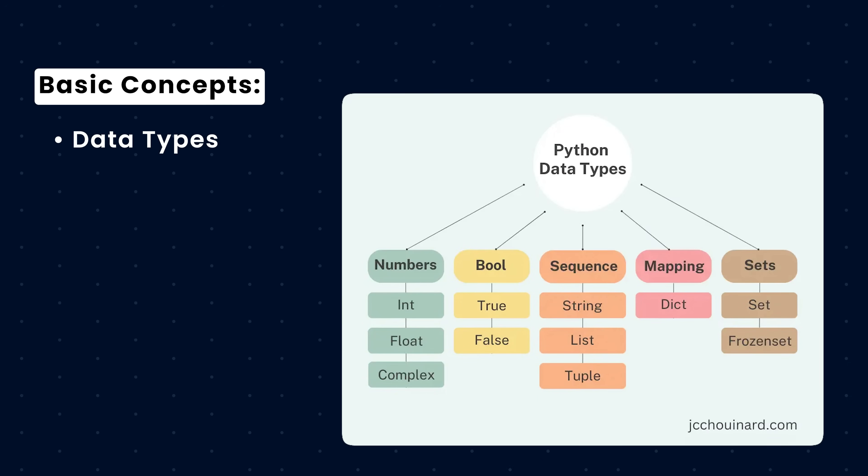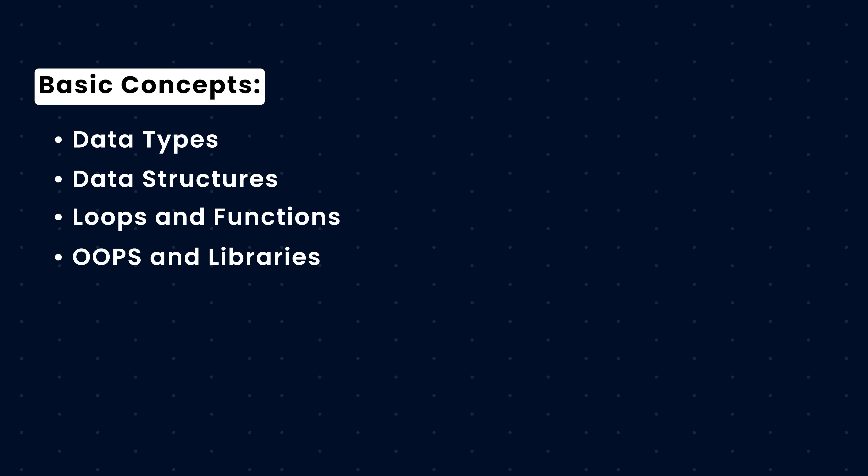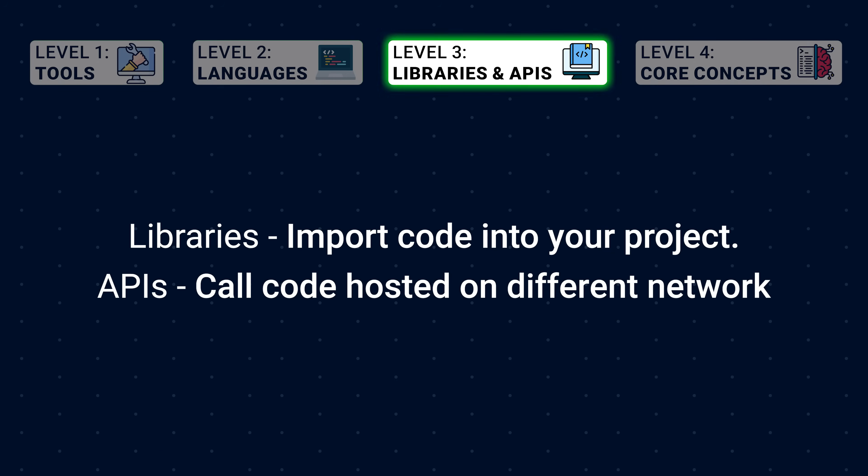Now onto Level 2, where you learn the basics of programming languages. Python is one of the most used programming languages for machine learning, deep learning, and AI, so some coding knowledge in Python is essential. If you're already good at JavaScript, you can also manage a lot of things without Python, especially if you're building Gen AI products. If you've never coded at all, make sure to get familiar with basic concepts: data types and operations, data structures, conditional loops and functions, object-oriented programming, using external libraries via package managers like NPM, and error handling — understanding how to write code that reacts in case of errors. Practically, you'll either import libraries into your project or call APIs hosted on a different network.